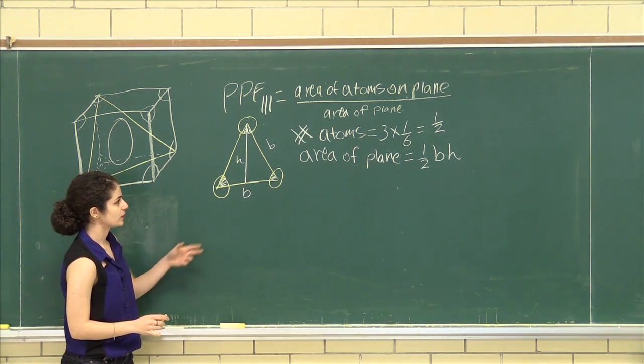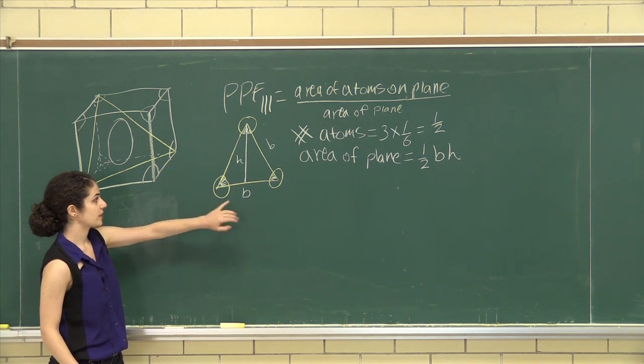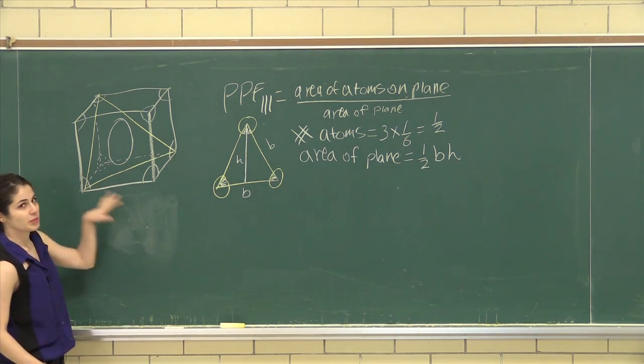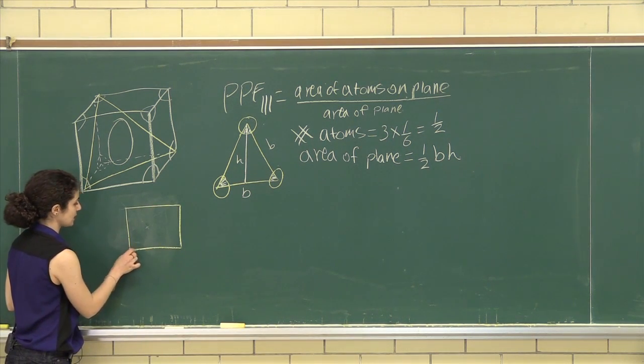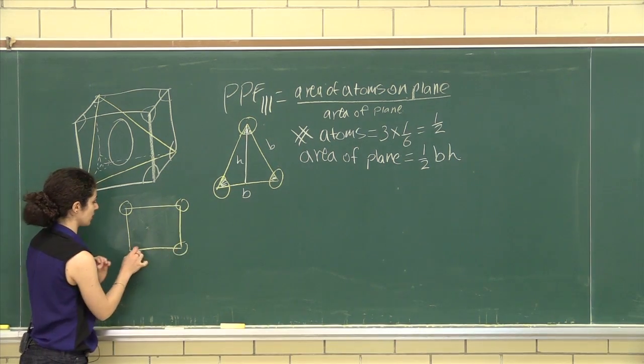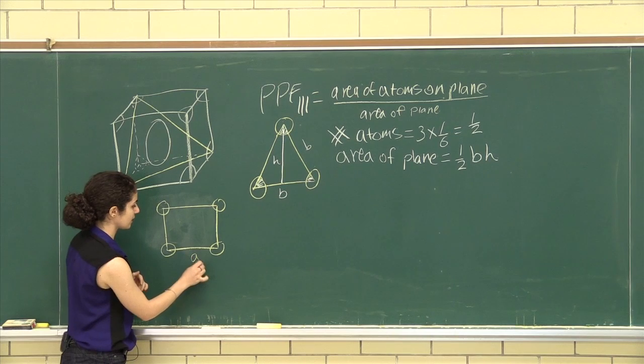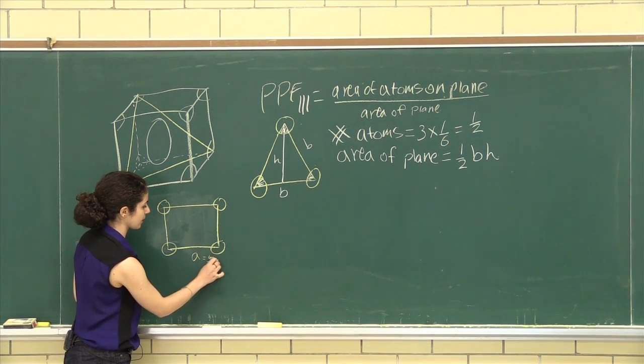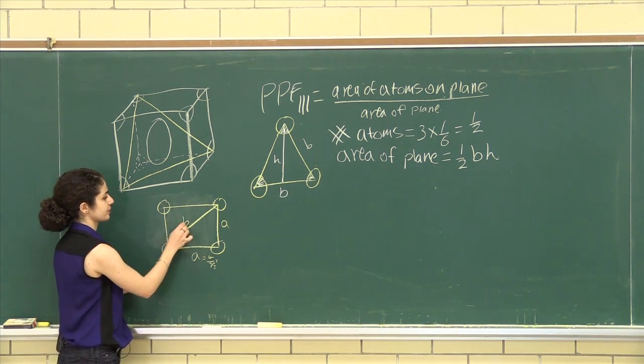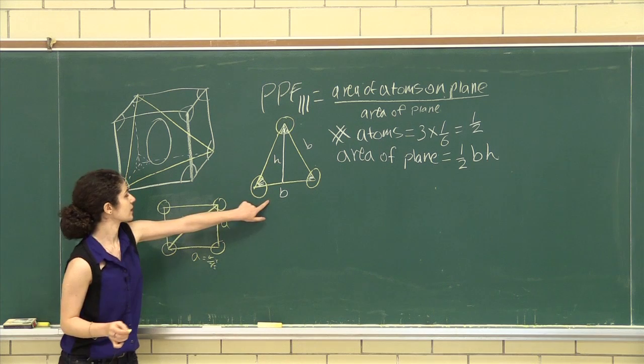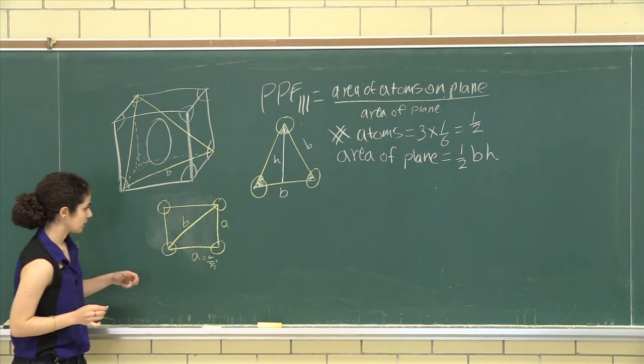Now let's calculate. We don't know either of them. We don't know H or B. So I'm going to start by calculating B. And for that, I need the bottom face of our BCC, which looks like this. This is the reduced sphere model. This is A, which is 4 over root 3, R. This is also A. And this is our B. If you can visualize that, this is what we're calculating.